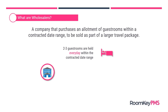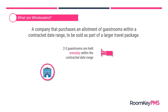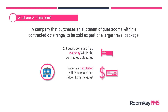Those date ranges are longer than a typical group block, whereas a group block would be a few days. These wholesaler contract date ranges are months in length. The rates for room and tax are negotiated with the wholesaler and are typically hidden from the guest, so instead of collecting room and tax payment from the guest at check-in or check-out, the hotel would typically receive a voucher.